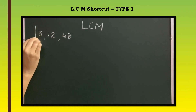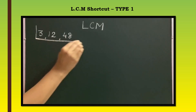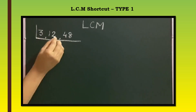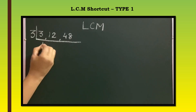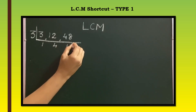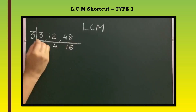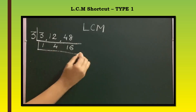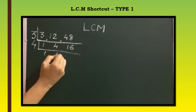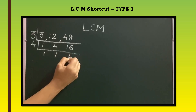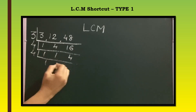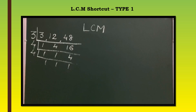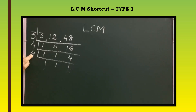LCM by division method: for 3, 16, 48 — divide by 3, then 1 times 4 gives 16, then by 4, then 4 tables gives 1, 1, 4, and last by 4 gives 1, 1, 1. Here the LCM is 3 into 4 into 4, which equals 48.